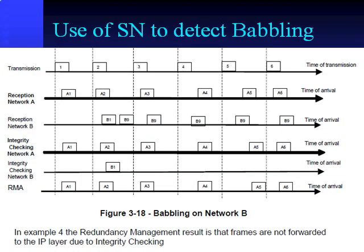Another use of the sequence number is to detect end system malfunction. As seen in line three, a malfunction may cause the same packet to be transmitted over and over. The integrity check of line five sees that the sequence numbers are not increasing by one or two and rejects all the bad packets on network B.